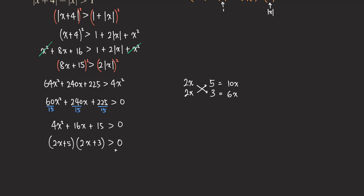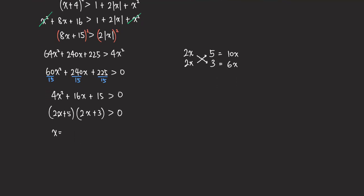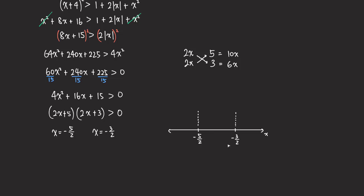Because this is in factored form, we can start testing points. The endpoints are: setting 2x + 5 = 0 gives x = −5/2, and setting 2x + 3 = 0 gives x = −3/2. So we make a number line and plot those endpoints. Negative 5/2 is the smaller one on the left, and negative 3/2 (which is −1.5) is on the right. This separates the number line into three intervals: x greater than −3/2, x between −5/2 and −3/2, and x less than −5/2.